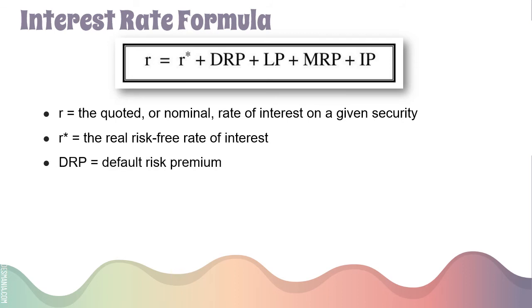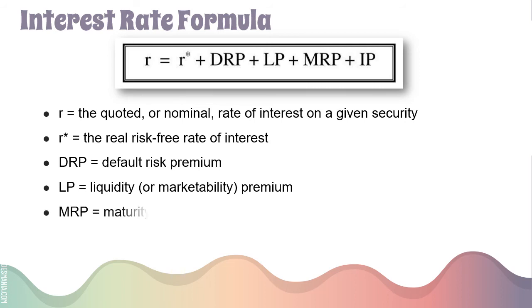DRP is the default risk premium, which reflects the possibility that the issuer will not pay the interest or principal at the stated time and in the stated amount. LP is the liquidity premium, charged to compensate for the fact that some securities cannot be converted to cash on short notice at a reasonable price — LP is relatively high on securities issued by small firms. MRP is the maturity risk premium, reflecting interest rate risk and the probability of changes in interest rates that might cause capital losses. IP is the inflation premium, equal to the average expected rate of inflation over the life of the security.